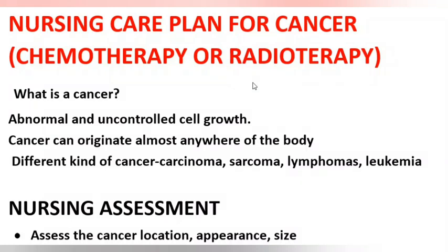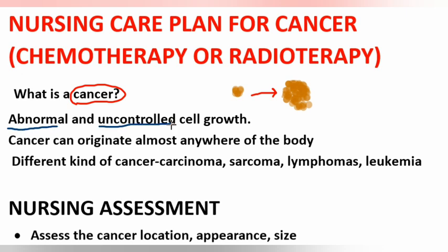Nursing care plan for cancer. What is cancer? Cancer is abnormal and uncontrolled cell growth. Cancer can originate almost anywhere in the body. There are different kinds of cancer: carcinoma, sarcoma, lymphoma, and leukemia. Carcinoma is the most common type of cancer.